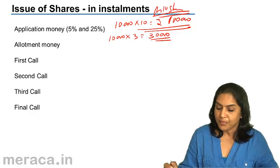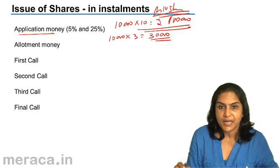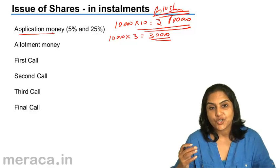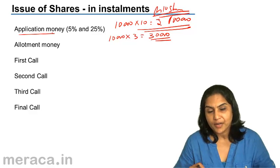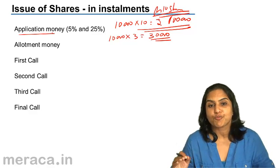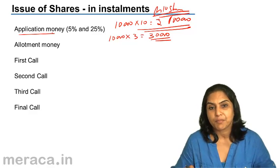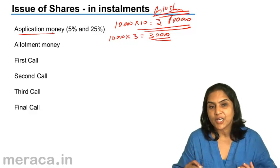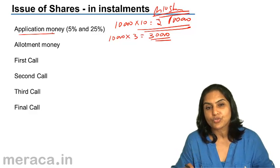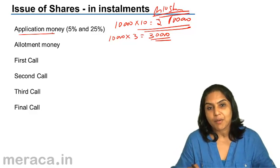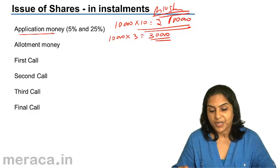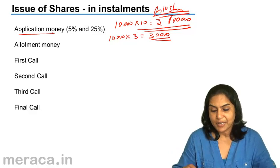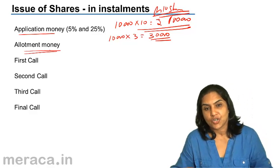The installments are normally called application money — that is the first installment, which has to be paid when the shareholder shows interest and responds to the offer made in the prospectus and applies for the shares. When the shares are allotted — once application money is received, the directors go through the applications and if everything is in order, shares are allotted. When allotment is done, usually at the same time the allotment money, or the second installment, becomes due.